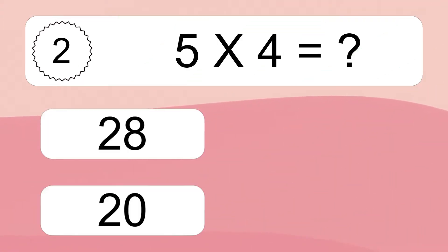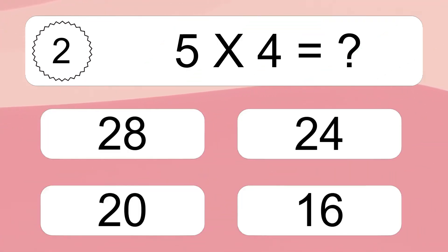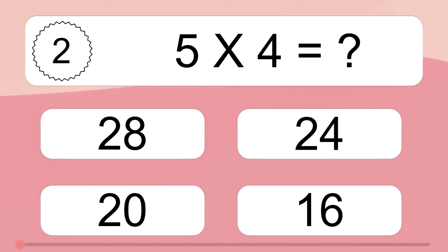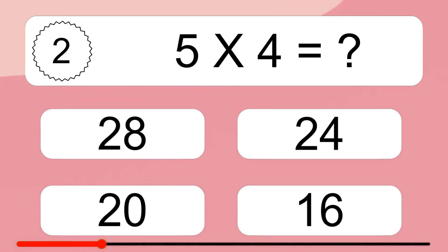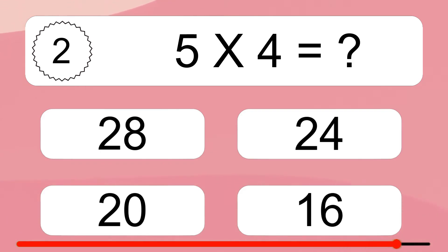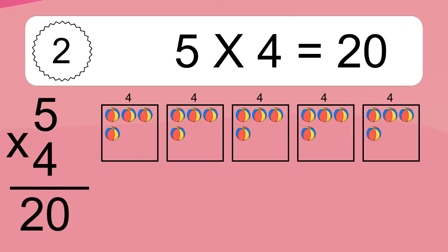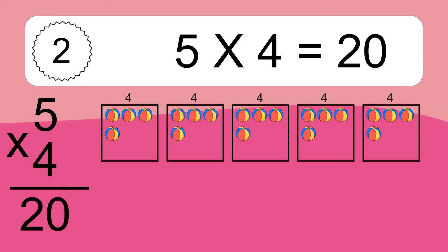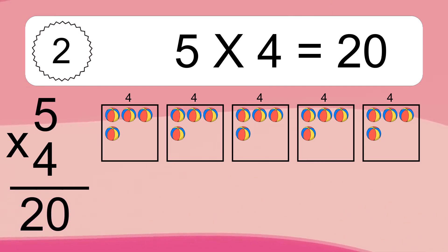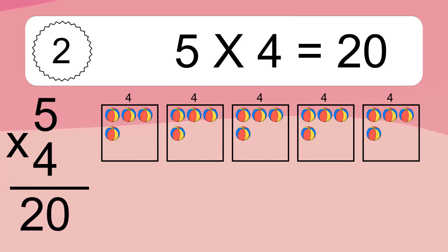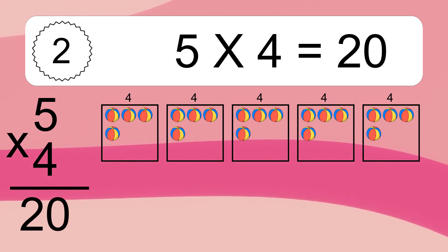5 times 4 equals what? 5 times 4 equals 20. We have 5 boxes, and each box has 4 colorful balls inside. If you count all the balls in all the boxes together, you will have 5 times 4 balls. This equals 20 balls.